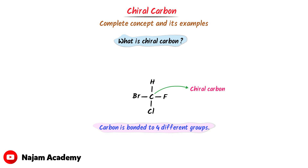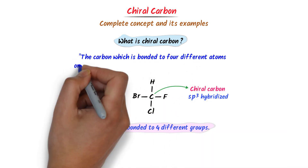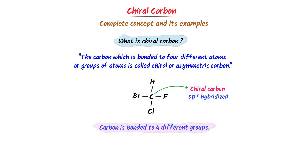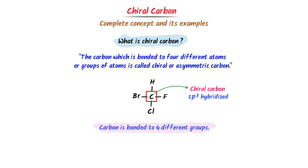Remember that chiral carbon is always sp3 hybridized. We define chiral carbon as the carbon which is bonded to four different atoms or group of atoms — it is called chiral carbon or asymmetric carbon. The carbon which is bonded to four different atoms or groups of atoms is called chiral carbon or asymmetric carbon. This is chiral carbon because it is bonded to four different groups or four different atoms.